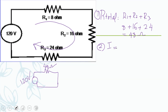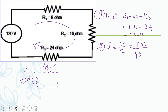Using I equals V over R: looking at the simplified circuit, I have forty-eight ohms and one hundred twenty volts. The current is one hundred twenty divided by forty-eight, which equals 2.5 ampere.